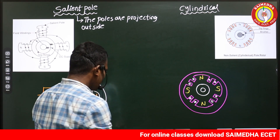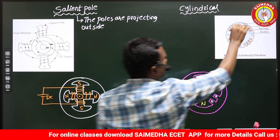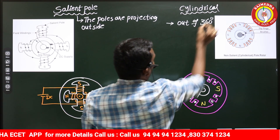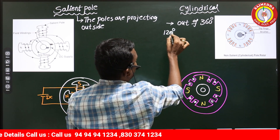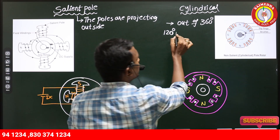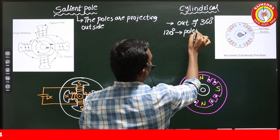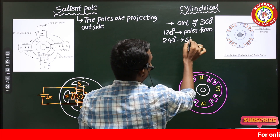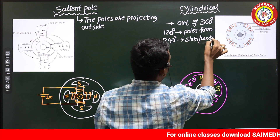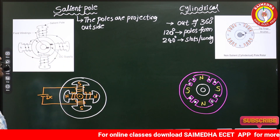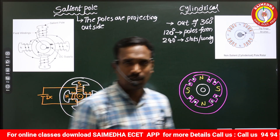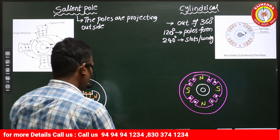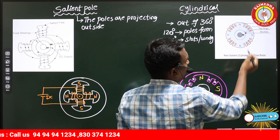In the cylindrical rotor, out of 360 degrees of rotor periphery, 120 degrees is used for poles formation, and the remaining 240 degrees is used for slots or winding. This is the main constructional difference: in the salient pole type the poles project outside, while in the cylindrical type 120 degrees is for poles and 240 degrees for winding.